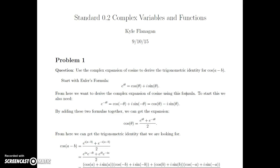All right, so this is going to be the video for standard 0.2, which is on complex variables and functions. And here we chose to do problem one, and the question is, use the complex expansion of cosine to derive the trigonometric identity for cosine a minus b.